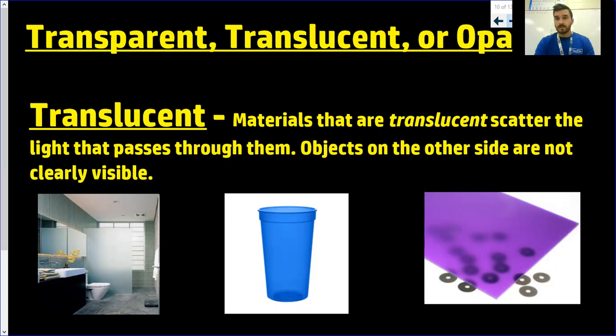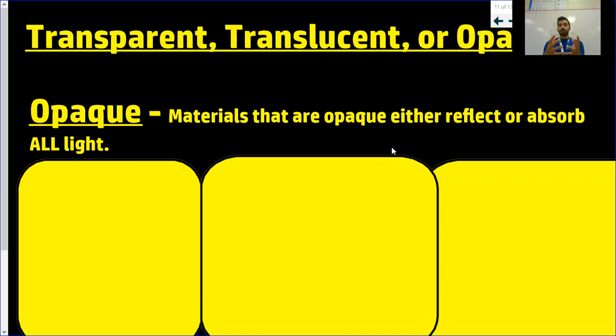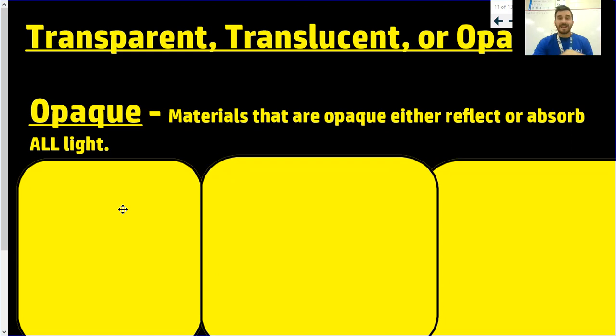If an item is opaque, that means the light is either just reflecting off of it or it's absorbing all of the light, meaning you can't see through it. So like this board right behind me — it's smooth and shiny, it's reflecting light, but it's opaque because I can't see through it. If it was transparent, I'd be seeing out into the hallway. If it was translucent, I'd also be seeing out there but not very clearly. Opaque just basically means you can't see through it.